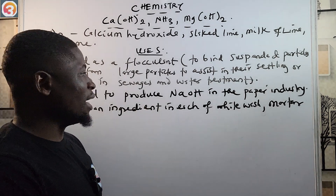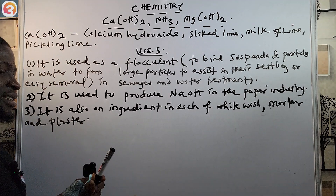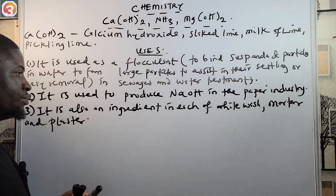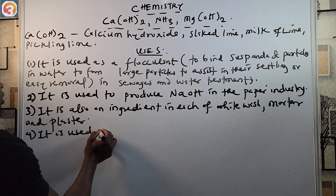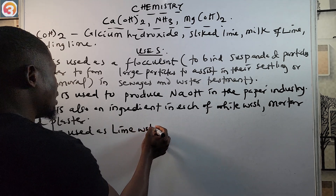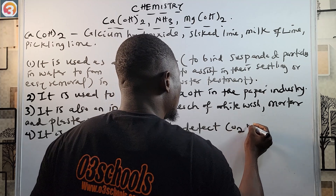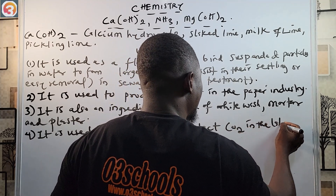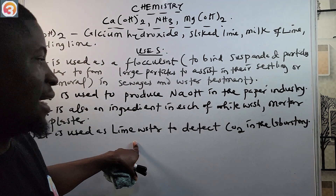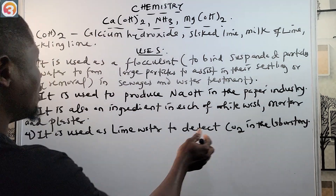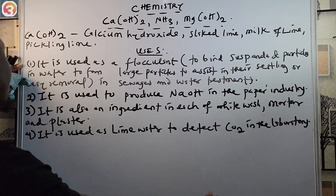Calcium hydroxide is also used as lime water to detect CO₂ — carbon dioxide — in the laboratory. So it finds application in the laboratory for detecting CO₂.